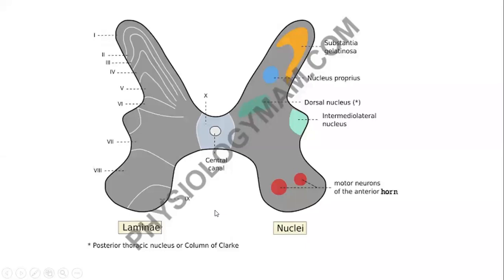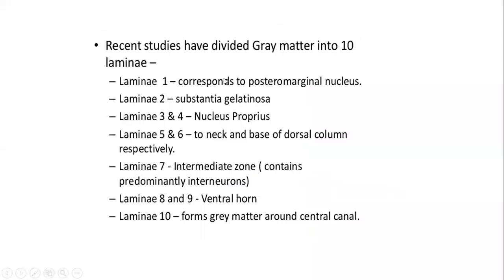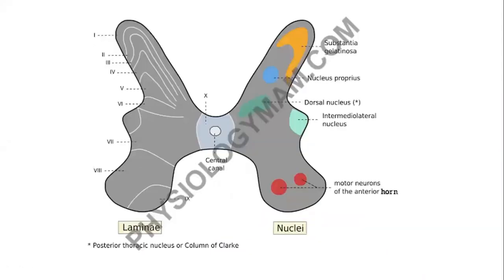Now look at this diagram, especially the left side, where Roman numerals label different parts of the gray matter — parts of the dorsal column, lateral column, anterior column, and gray commissure. The numbering goes from one through ten. These are called Rexed laminae — spelled R-E-X-E-D — named after the scientist who discovered them.